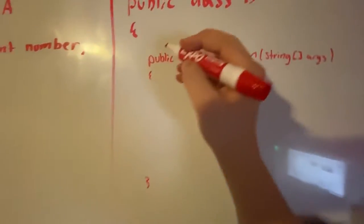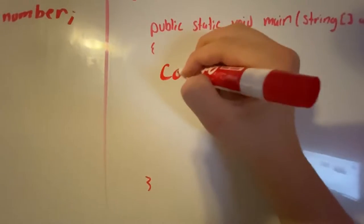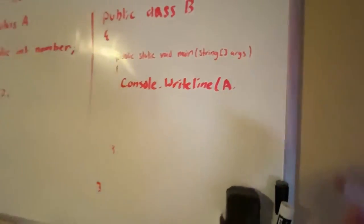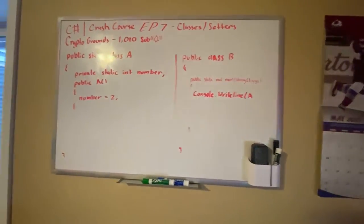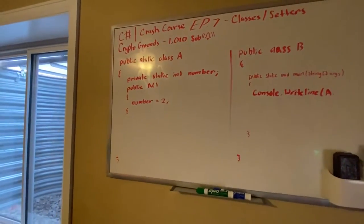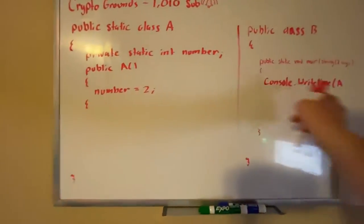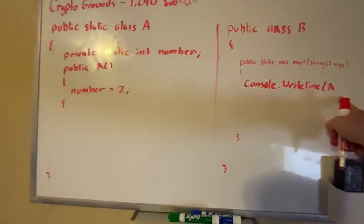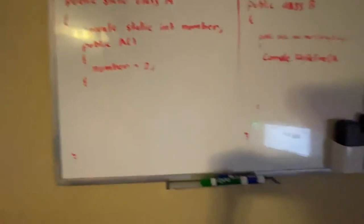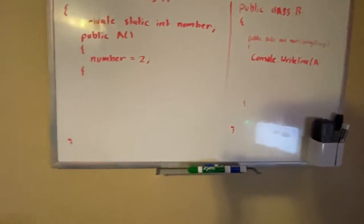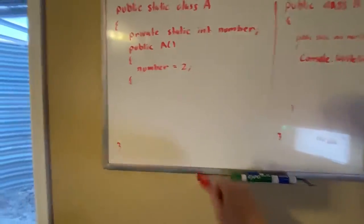So what we can do is if we do console a.number, now it's not going to work because this is private. But if we make a getter, it will return 2, just like we did last time, except instead of 0 it's 2.